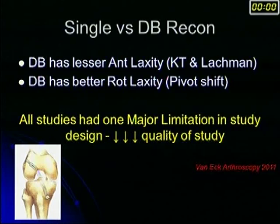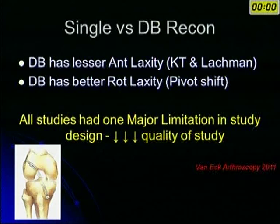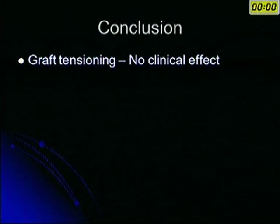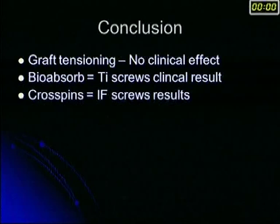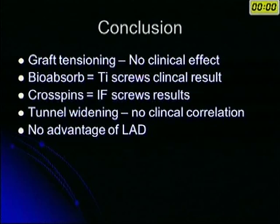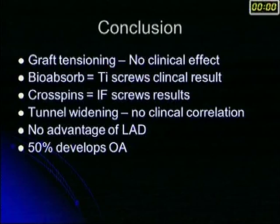In conclusion: graft tensioning does not have much effect. Bio-absorbable and titanium screws give equally good results — the choice is yours. Cross-pins versus different screws — again, the surgeon's choice. Tunnel widening has no clinical relevance as of now. No advantage over synthetic ligaments. Always explain to the patient that the literature shows 50% of these patients do develop early osteoarthritis whether you repair the ACL or not. Meniscectomy has a definite correlation with osteoarthritis, and studies clearly show that anatomic reconstruction gives better results. Thank you very much.